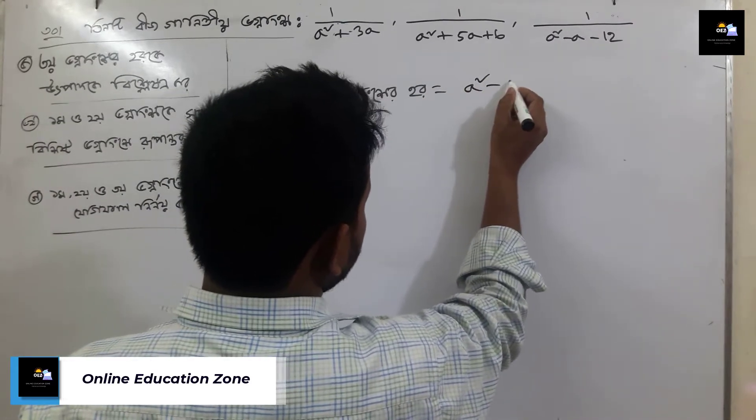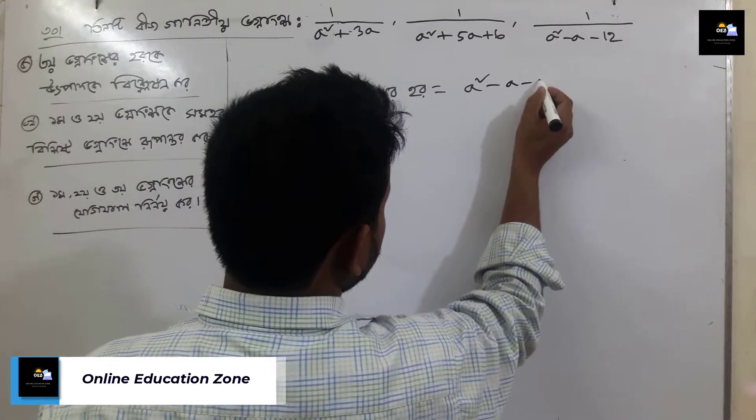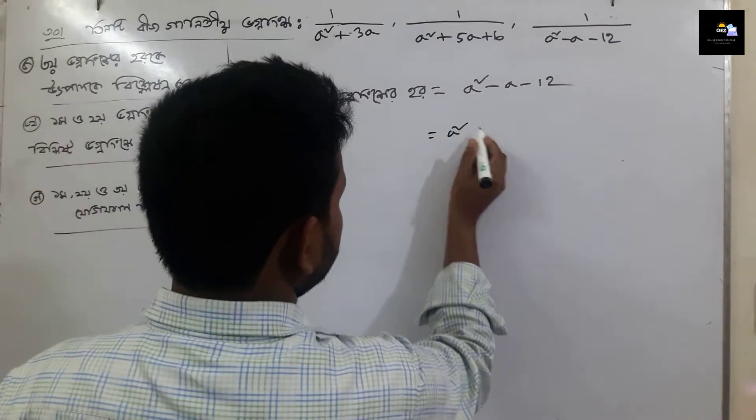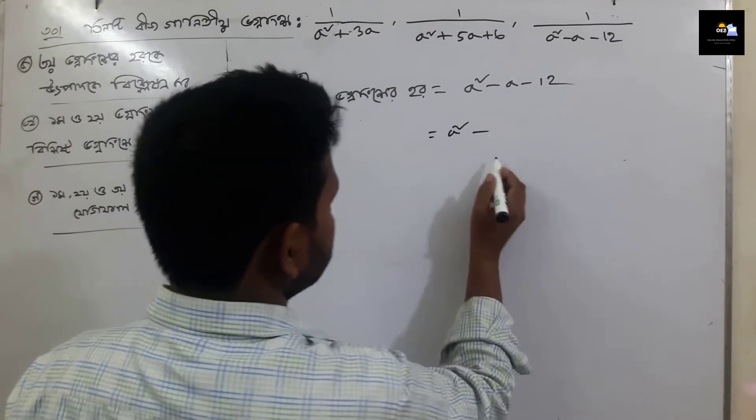Starting with a square minus a minus 12. We need to factor 2x of corner: a square minus a minus 12.